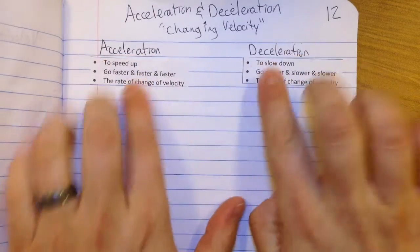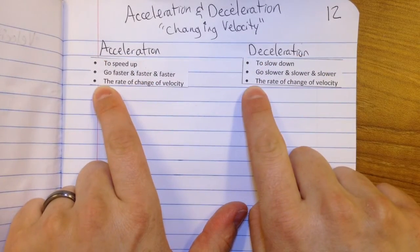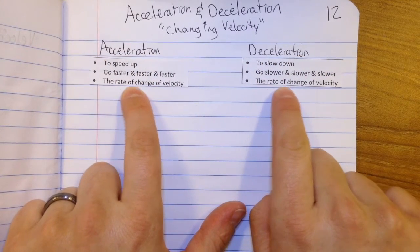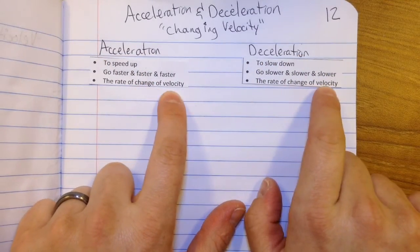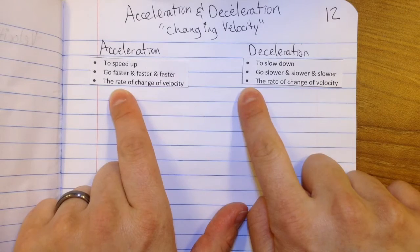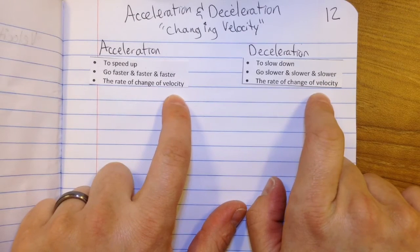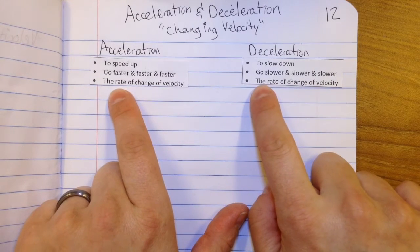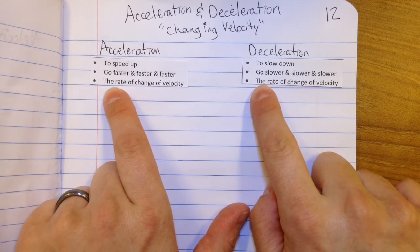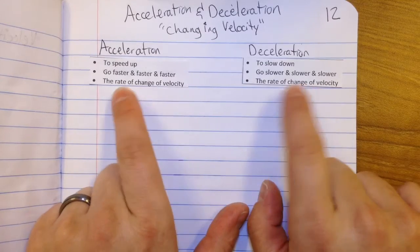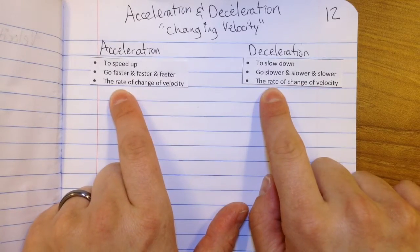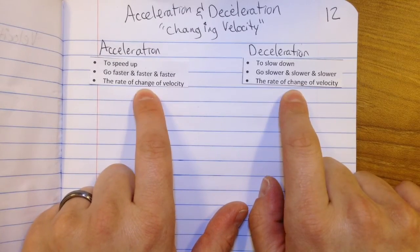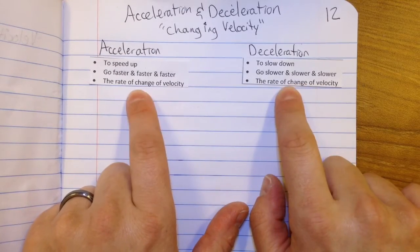Now, if you notice, both of them at the last bullet points are the same: the rate of change of velocity. That's actually the scientific definition — the fancy formal physics definition. The rate of change of velocity. So, how quickly the velocity is changing.